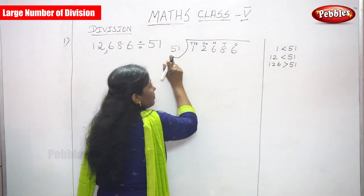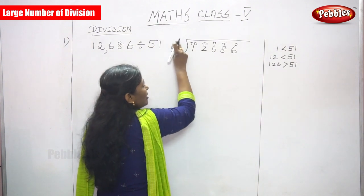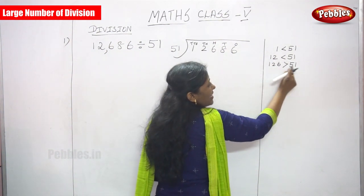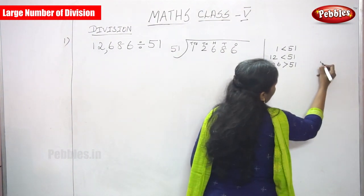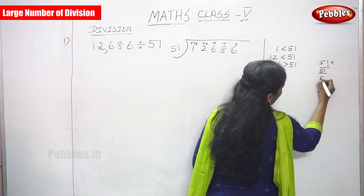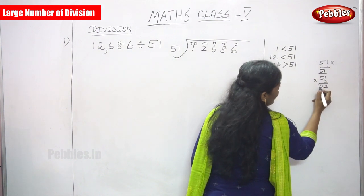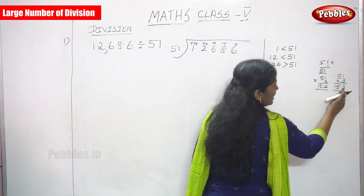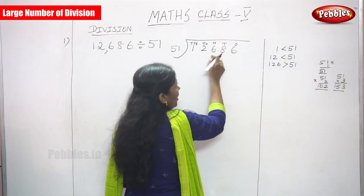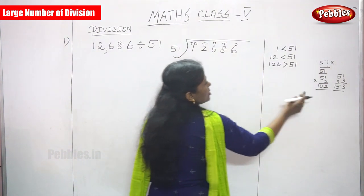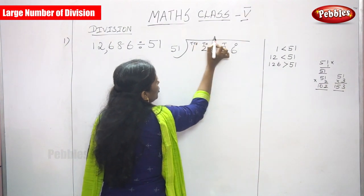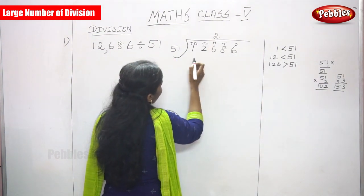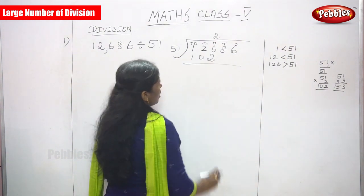The dividend must always be greater than the divisor. So you have to build the table now. 51 × 1 = 51. 51 × 2 = 102. 51 × 3: 1 three is 3 and 5 threes are 15, so 153. That is greater than 126. The number must always be less than 126, so 2 is the right answer. Write 2 in the hundreds place, since 51 × 2 = 102.